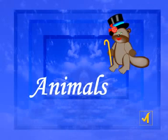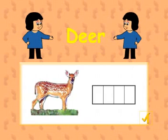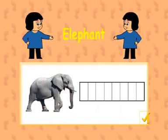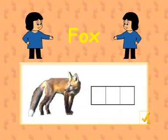Animals. Deer. D, E, E, R. Deer. Elephant. E, L, E, P, H, A, N, T. Elephant. Fox. F, O, X. Fox.